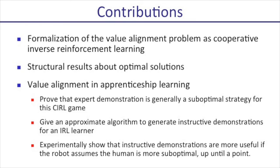We use our model to analyze value alignment in an apprenticeship learning setting, and show the following results. First, we show that expert demonstration combined with vanilla inverse reinforcement learning, or IRL, is a generally suboptimal strategy. Second, we give an approximate algorithm that generates instructive demonstrations for an IRL learner — our approach leverages properties of IRL to trade off between the reward collected during the demonstration and the chance that the robot learns the correct objective. Finally, we show that instructive demonstrations are more useful if the robot assumes the human is suboptimal, but only up until a point.